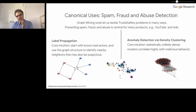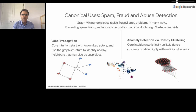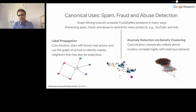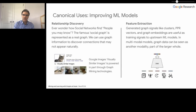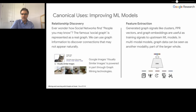Another big area is using graph-based learning to improve other ML models. In the context of relational discovery, we can answer questions like 'people you may know' in a social network by navigating the graph. A concrete application is Google related images — when you search for an image and click on it, the 10 related images shown are constructed using graph mining technologies. We also use graph-based signals such as personalized vectors, graph embeddings, and clusters as features in other machine learning models, which is very useful in multimodal settings.